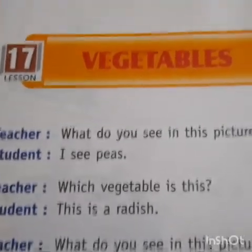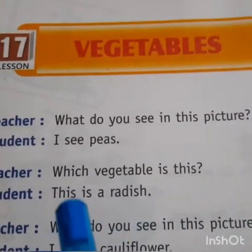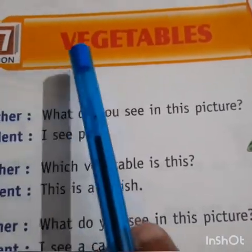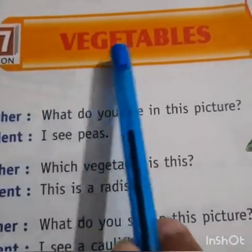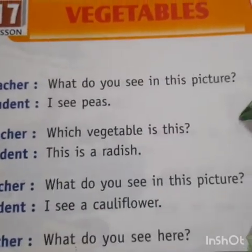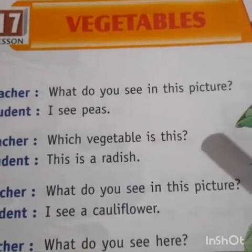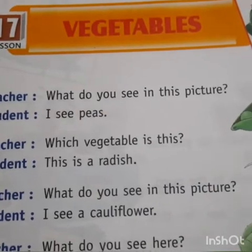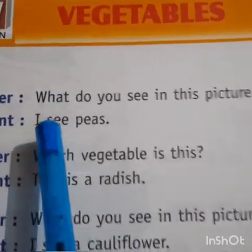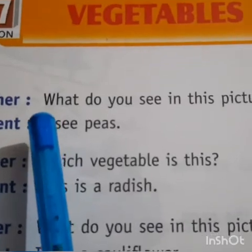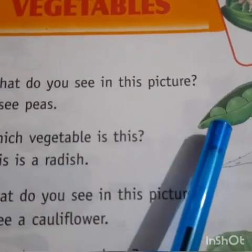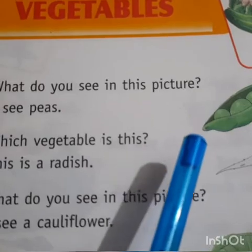So children, this is our second last chapter — lesson number 17, and the topic is vegetables. Repeat after me. We will divide this chapter in two parts. This is your first part. Repeat after me, and we will start the questions.